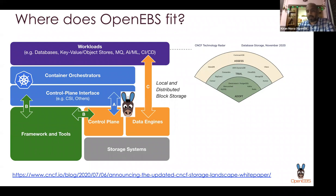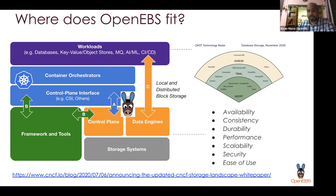OpenEBS supports local and distributed block storage and is tightly integrated into Kubernetes. It is in fact a Kubernetes add-on, and the control plane of OpenEBS helps you integrate operational aspects into the frameworks and tools that enterprises already have. Storage typically means the data platforms, and those actually need some kind of underlying block volumes or persistent volumes in the Kubernetes world that have certain characteristics around availability, consistency, durability, and ease of use.